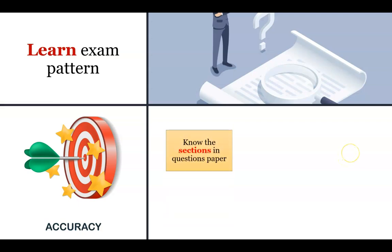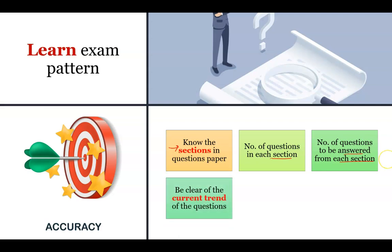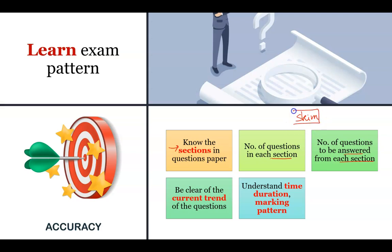Learning the exam pattern will help you in specific ways. You need to know the sections in the question paper, the type of questions coming, how many questions you have to attempt in each section (A, B, C), total questions present, and total questions to be answered. Also be clear on the current trend — whether they are giving more true/false, graphical, or numerical questions. For example, for enzyme kinetics, are they giving theoretical or numerical questions? Know the current trend.